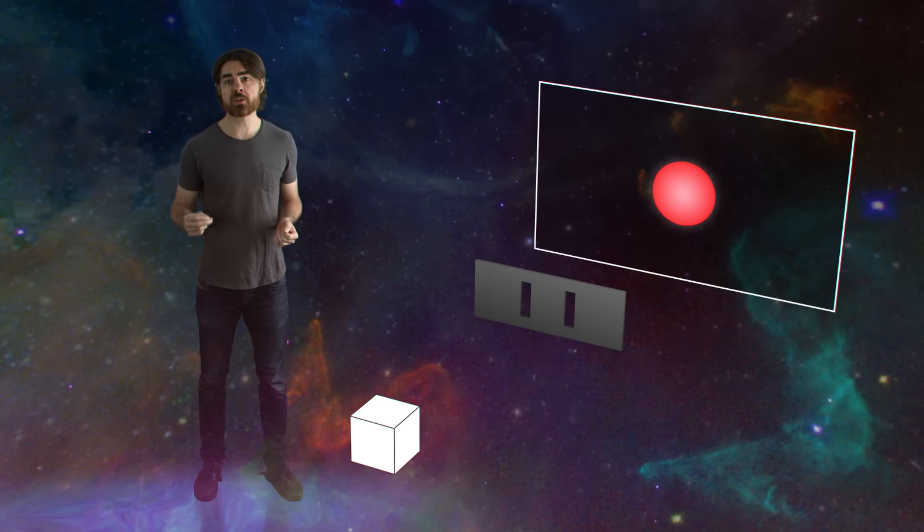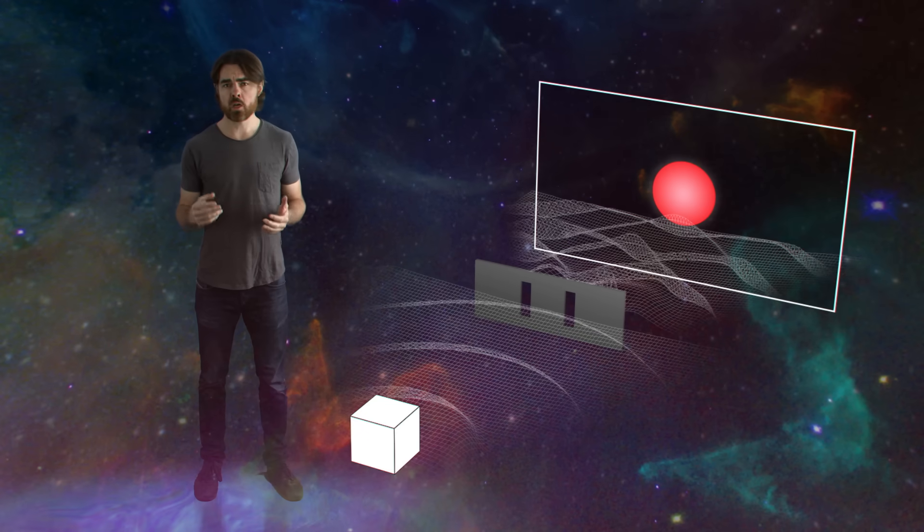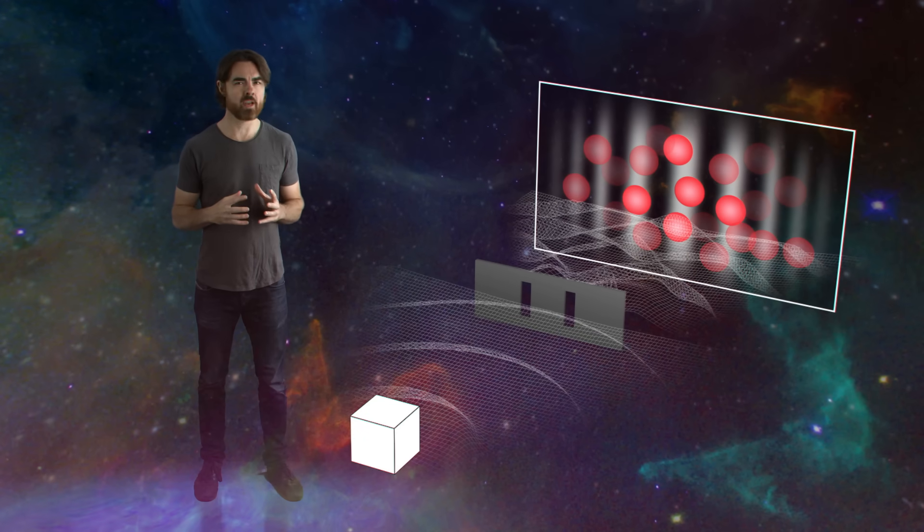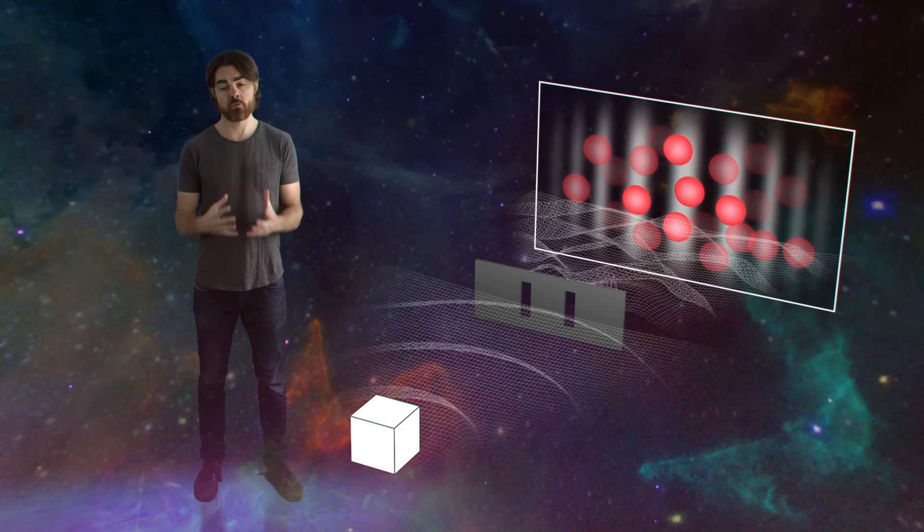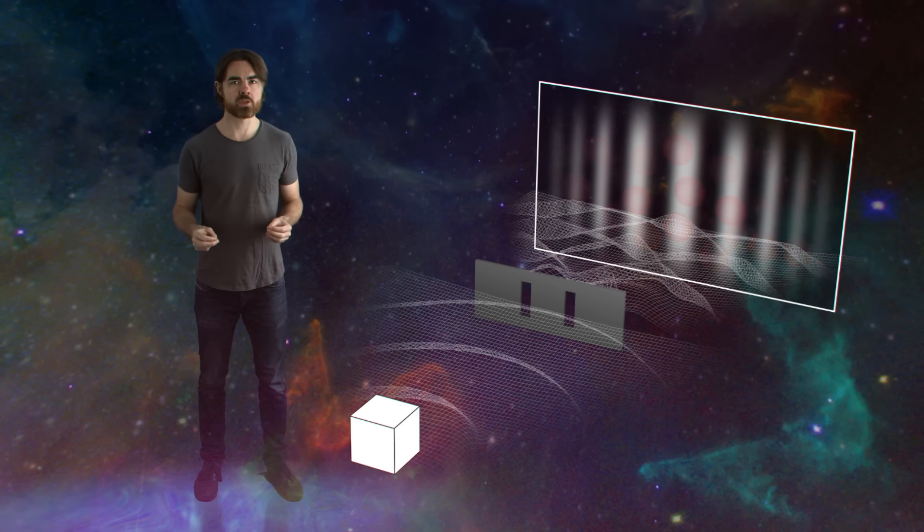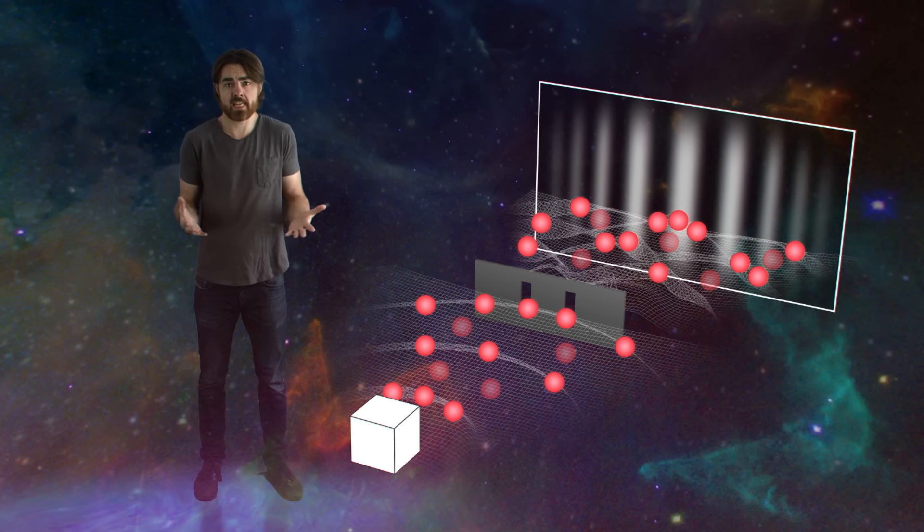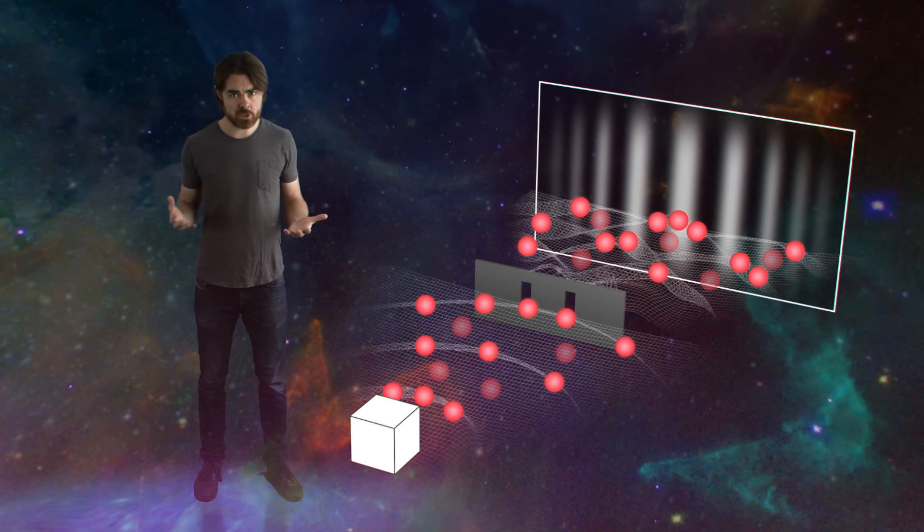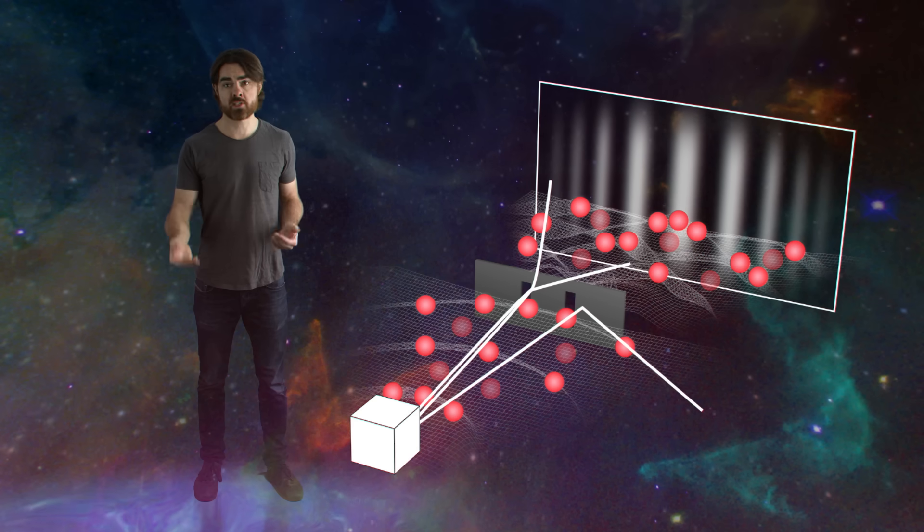Quantum mechanics very successfully predicts this result by describing each particle's journey as a superposition of all possible trajectories. In other words, the particle simultaneously takes all possible paths, which means it passes through both slits.